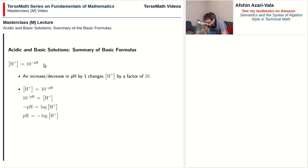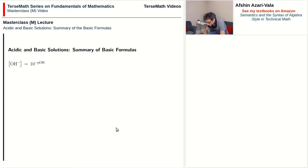All right, let's move on to the third formula, which is very similar to the second formula. This time, the concentration of OH- is equal to 10 to the power of negative pOH. Why don't you tell me how changes in pOH affect the concentration of OH-, and also rearrange the equation for pOH.